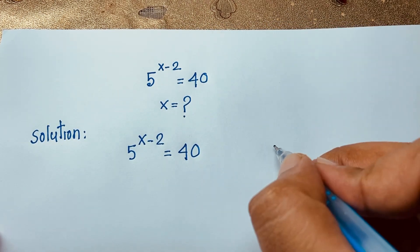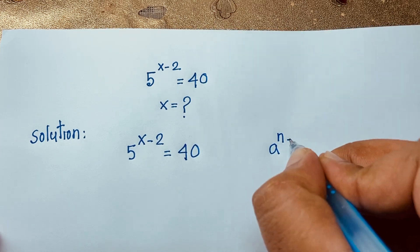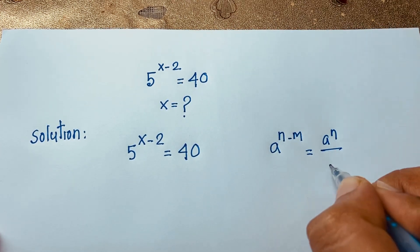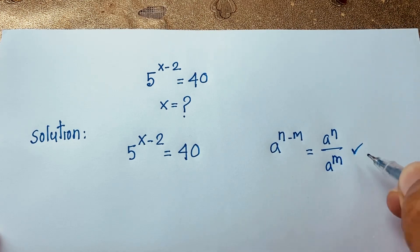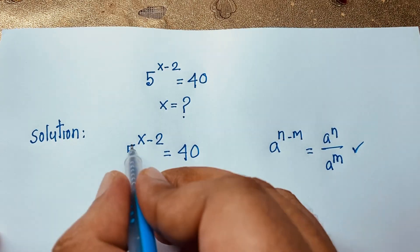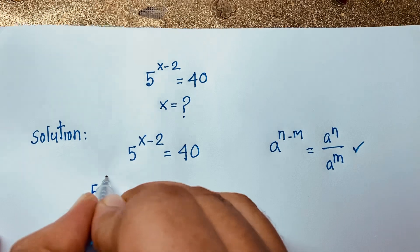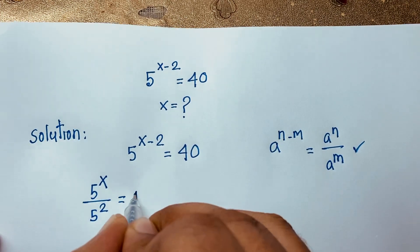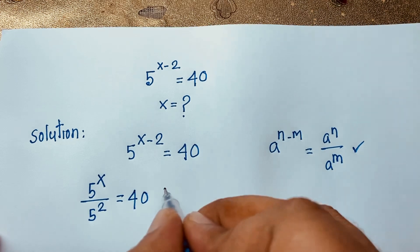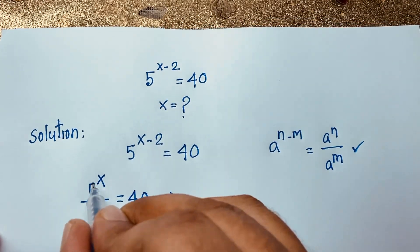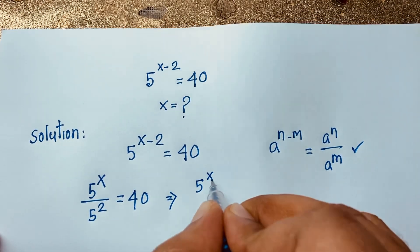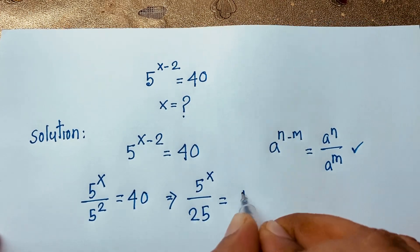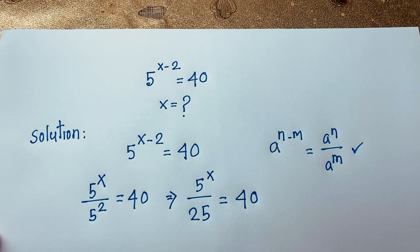Using the exponential law, a to the power (n minus m) equals a to the power n over a to the power m. According to this formula, the expression becomes 5 to the power x over 5 to the power 2, which is equal to 40. Here 5 to the power 2 equals 25, so we have 5 to the power x over 25 is equal to 40.